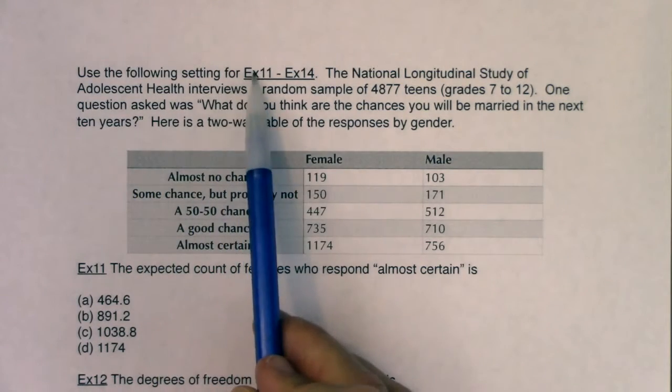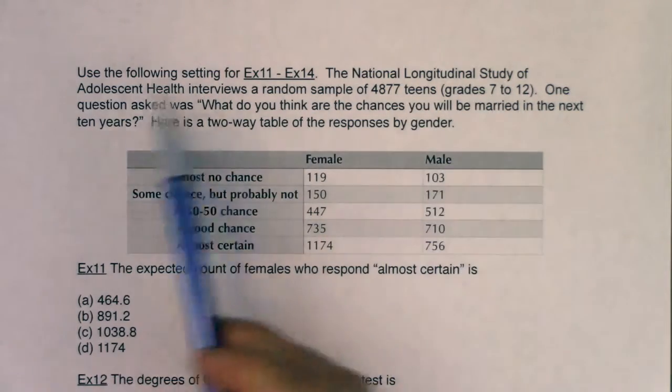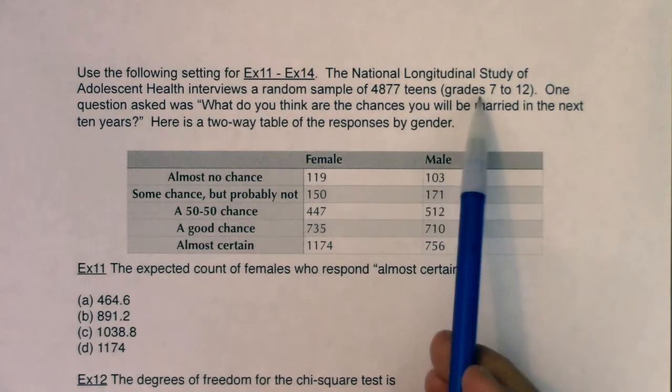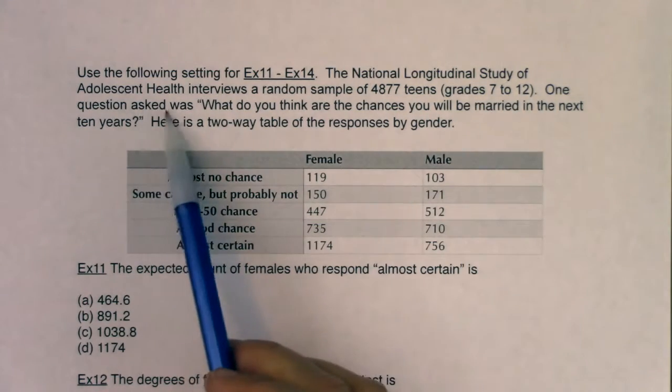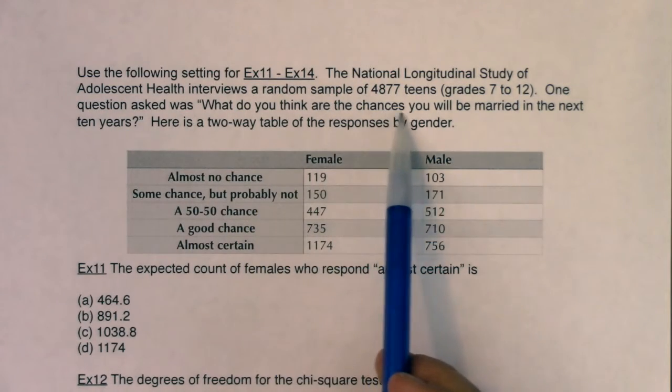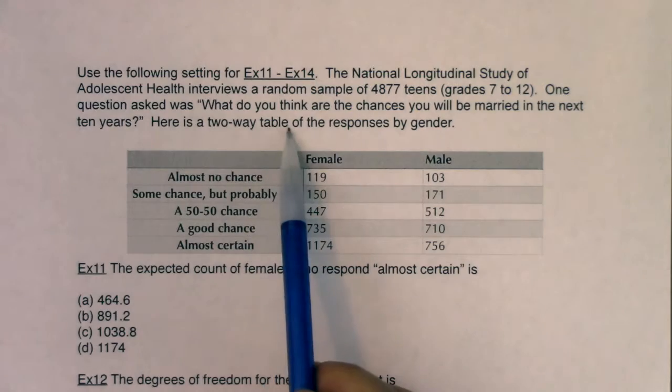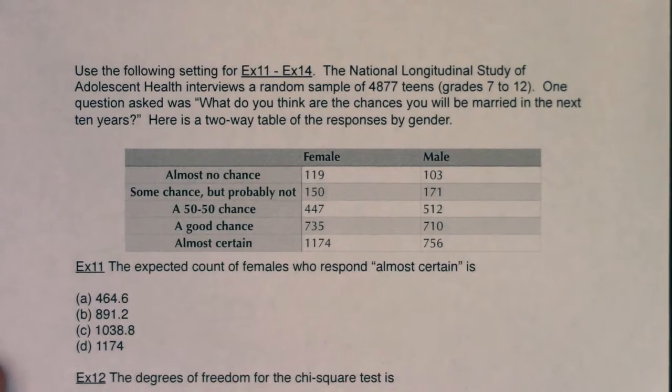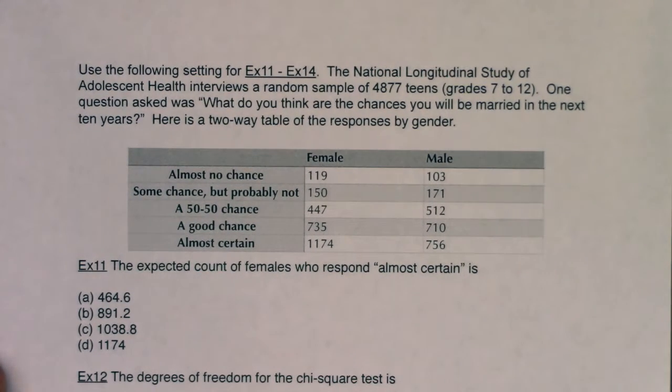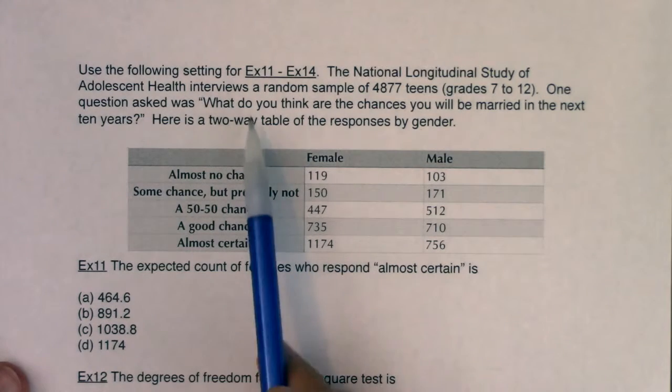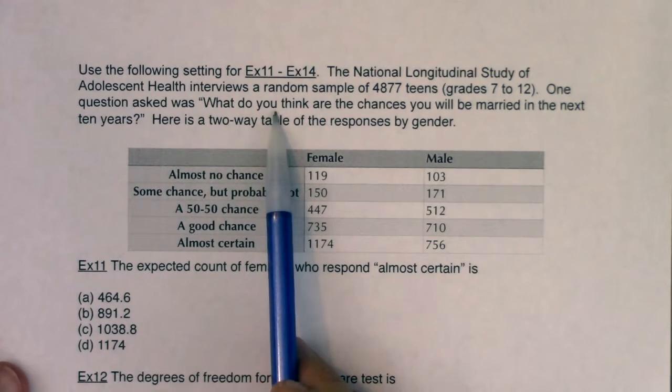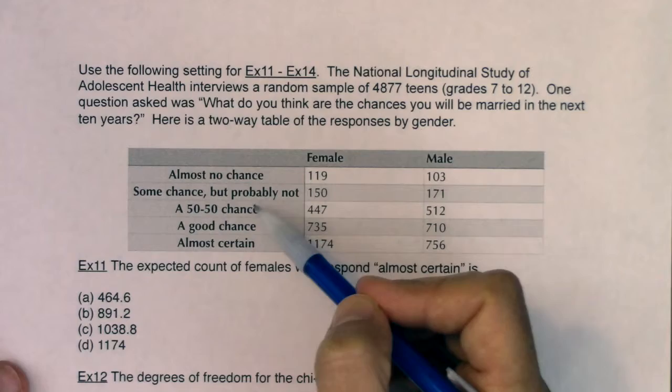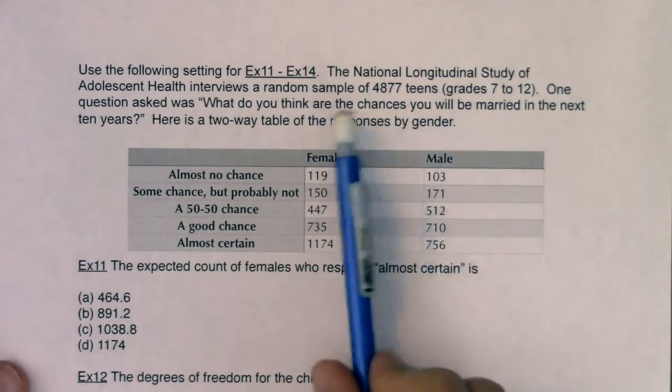But here we go. We're going to use the following setting for examples 11 through 14. The National Longitudinal Study of Adolescent Health interviews a random sample of 4,877 teens between grades 7 and 12. One question asked was, what do you think are the chances you will be married in the next 10 years? Here is a two-way table of responses by gender. So before I even get going on this problem, I can hear that those 4,877 teens, they were asked a categorical variable, right? What do you think the chances are that you'll be married? And it looks like they've put them into one of five categories. Almost no chance, some 50-50, good chance, almost certain. And they broke them up by gender.